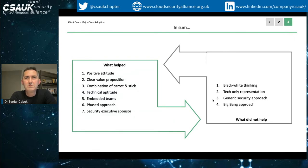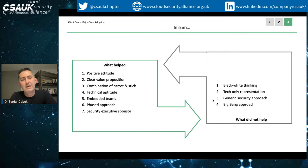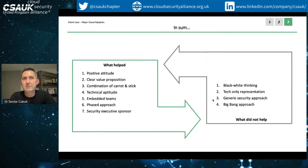Technical aptitude - security teams often talk about generic security and not necessarily specific to AWS or Azure and what works with them. Security teams work really well when embedded within IT. If you're designing a target operating model, don't do it on the side - it needs to be included within your IT team. We talked about a phased approach, but ultimately it all comes down to having a good sponsor in security. If we are not at the table when the feasibility studies are done or when the business cases are built, we won't be at the table at the end. Avoid black-and-white thinking - there are lots of shades of gray.